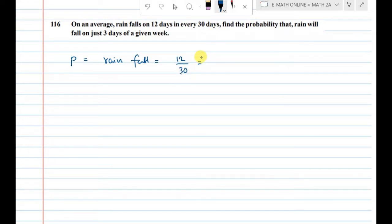12 out of 30, cancel out the 6, gives us 2 by 5. The probability of not raining, q equals 1 minus P, which is 1 minus 2 by 5, equals 3 by 5.